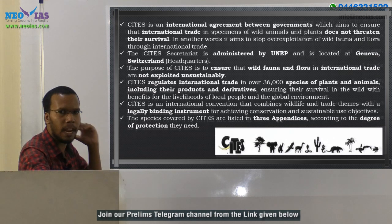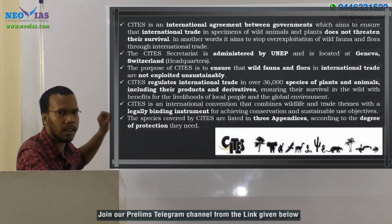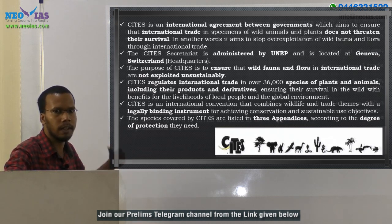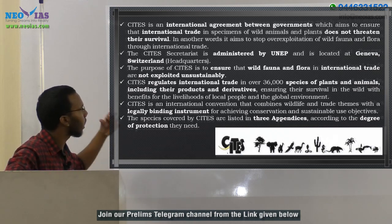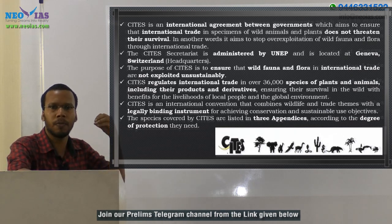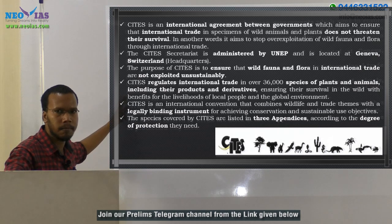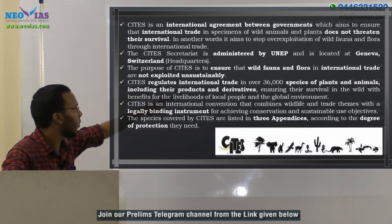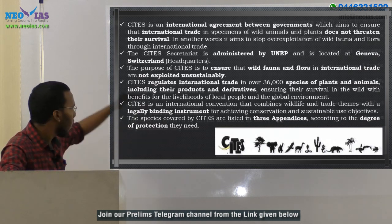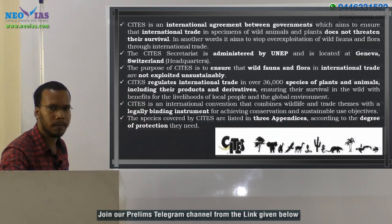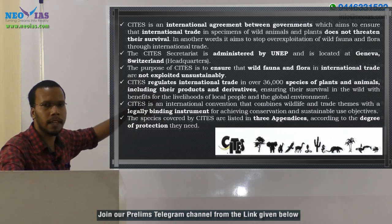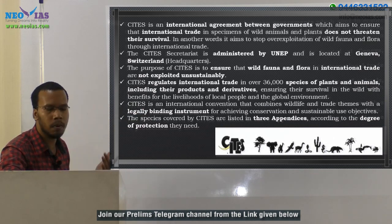The aim of CITES is to ensure that wild fauna and flora in international trade are not exploited unsustainably, so CITES also deals with sustainable development. CITES regulates international trade in species of plants and animals, and not only the plants and animals themselves — their products and derivatives are also regulated. CITES also ensures species survival in the wild, along with benefits for the livelihoods of local people and the global environment.